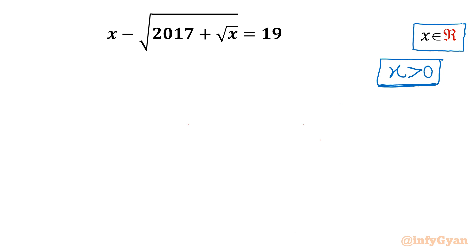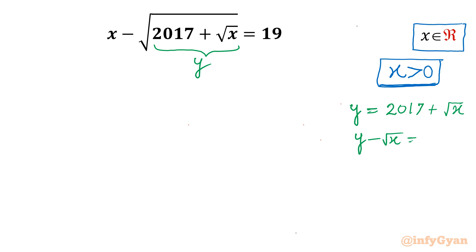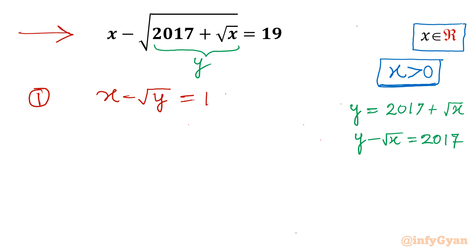Now for point number 2, I will use substitution. The radicand I will consider equal to y. So let y equal to 2017 plus square root x. From here I can write y minus square root x equal to 2017. Now let's frame two equations from the given equation and substitution. The first equation from the original one is x minus square root y equal to 19. The second equation from the substitution is y minus square root x equal to 2017.